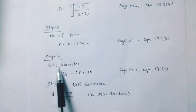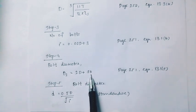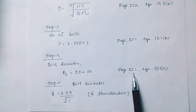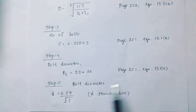Step 4: Bolt diameter. Bolt diameter D2 equal to 2D plus 50. Page number 251, equation 13.1E.